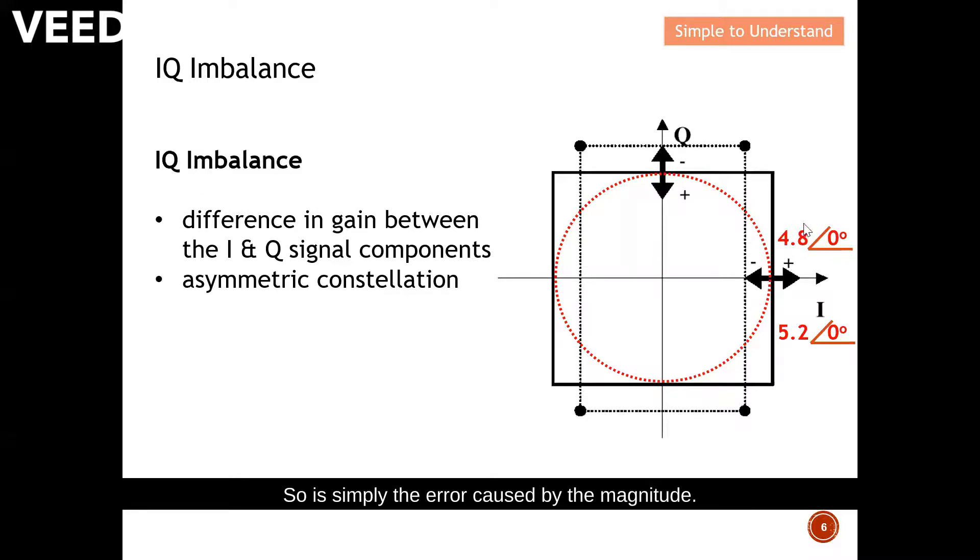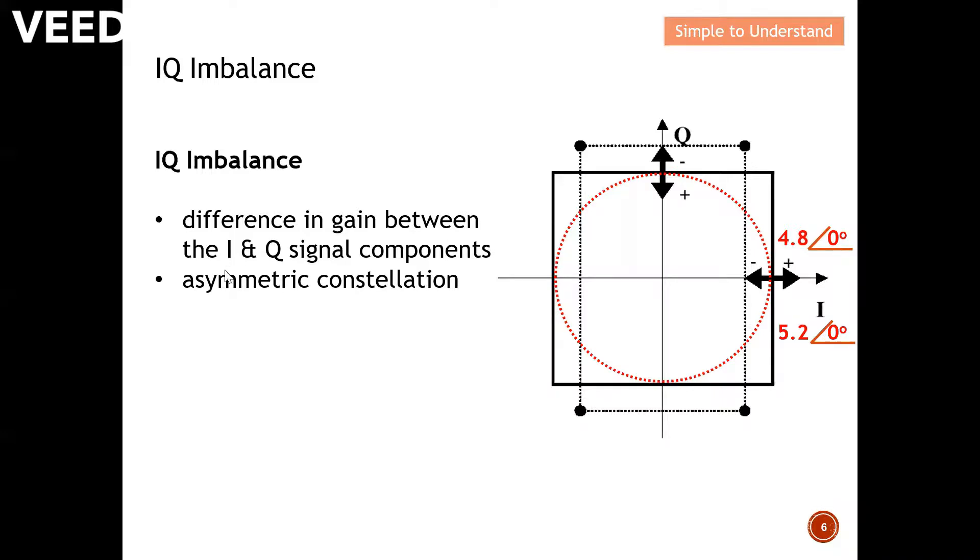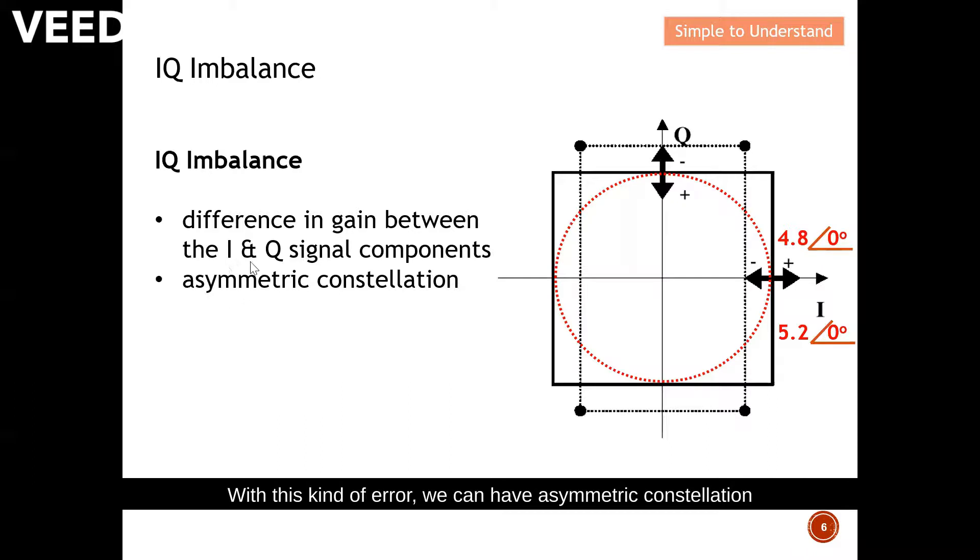So over here is the I signal. You can also have the error in a Q component also. So it's simply the error caused by the magnitude. As mentioned, we can't have guaranteed five consistent. Sometimes we have overshoot, sometimes we have undershoot. With this kind of error, we can have an asymmetric constellation which means that it doesn't look like a perfect circle anymore. So this is the first error that is possible that arises from this constellation diagram.